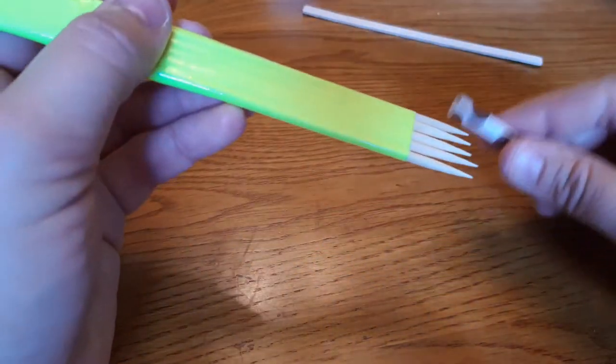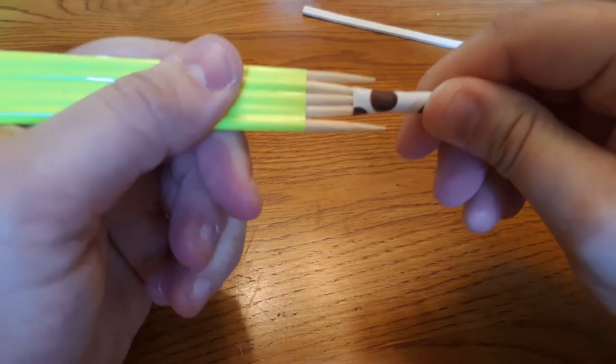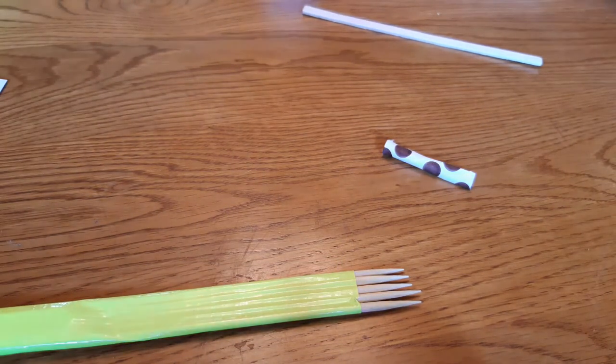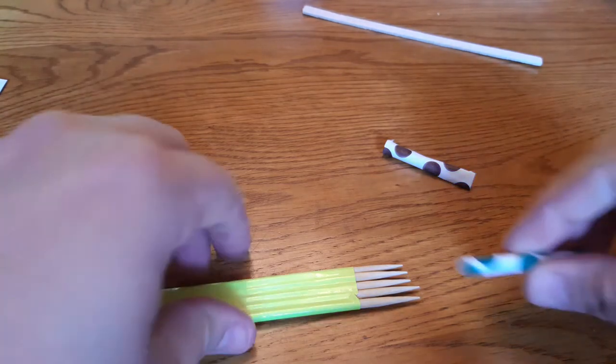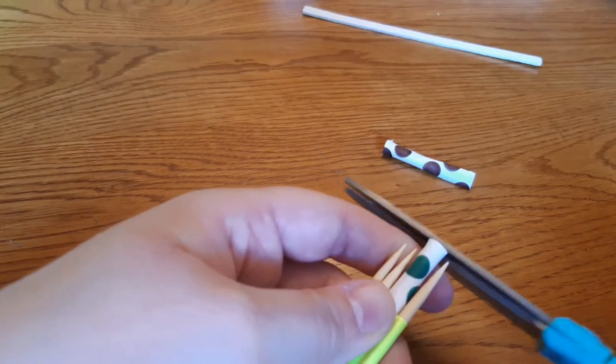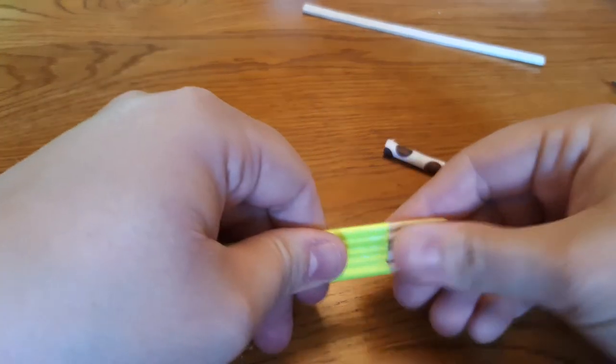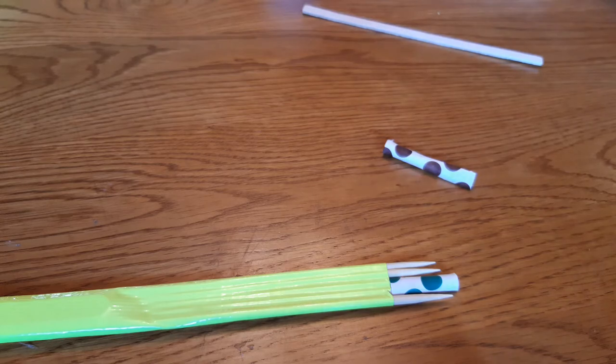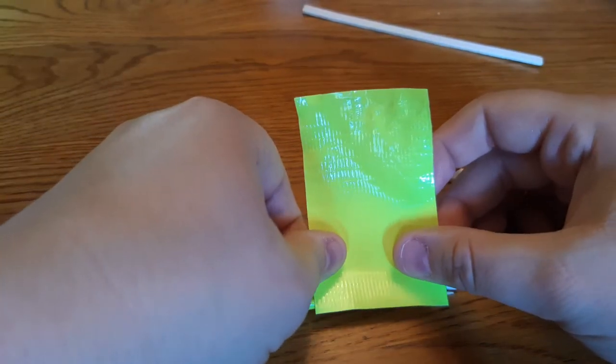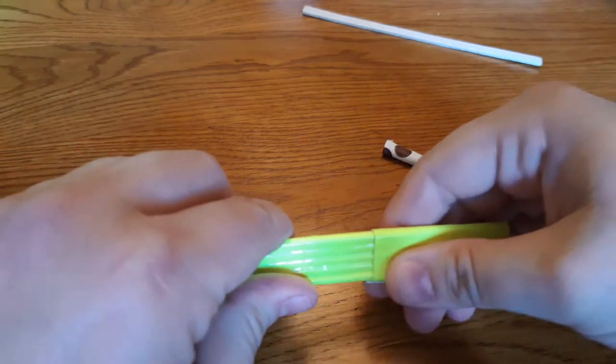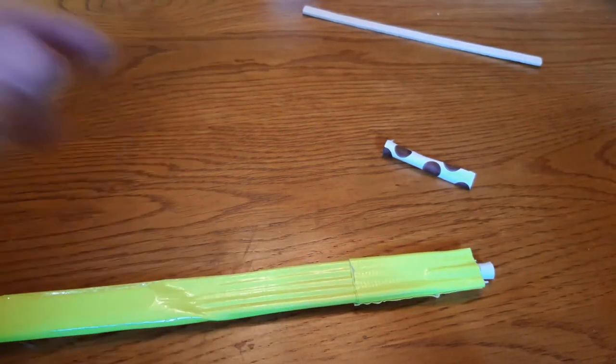Alright, now we're going to take the pointed part and we're going to insert just the middle three skewers into the straw. And if you can't quite get all three of them in here, then do the middle two. And my piece is a little big here so I think I'm just going to trim. I didn't get all the middle three but I got the middle two, I think that will be good. And then we need to tape that part on. There you go, that is taped on. Pause and do that step now.